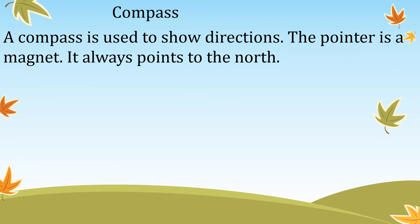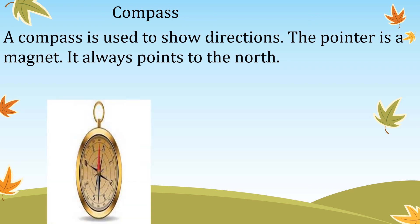A compass is used to show direction. You can see here the picture of a compass. This tool looks like a clock but has no numbers — instead it shows N, E, W, S: North, East, West, and South. This tool is used to show direction. The pointer is a magnet and it always points to the North. This needle is called a pointer.